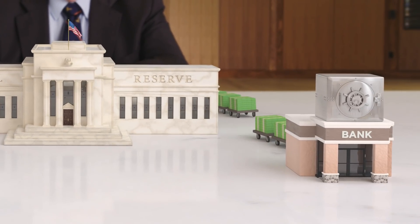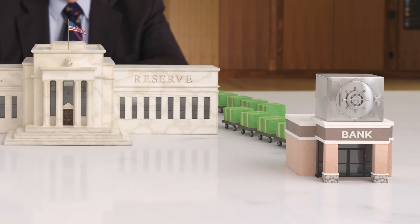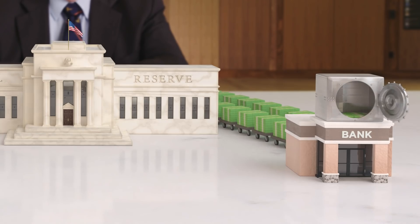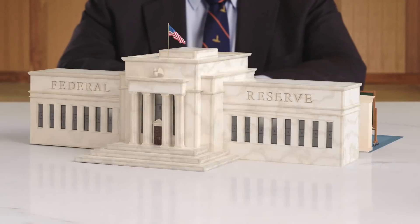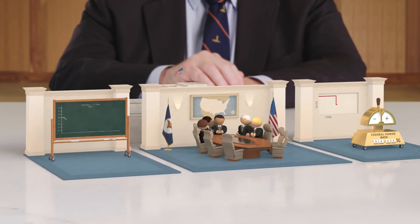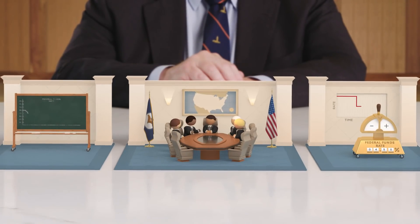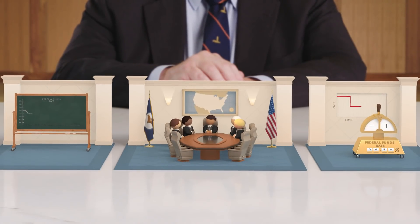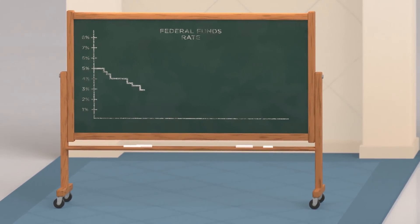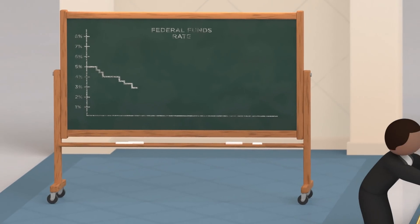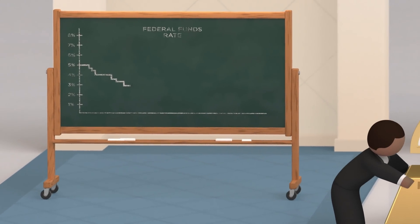Monetary policy involves the control of the money supply, currency, and deposits in the economy by our central bank, the Federal Reserve. Perhaps the simplest way to think about how monetary policy works is through the federal funds rate — the interest rate that banks charge one another. The Fed can change the federal funds rate by changing the money supply.